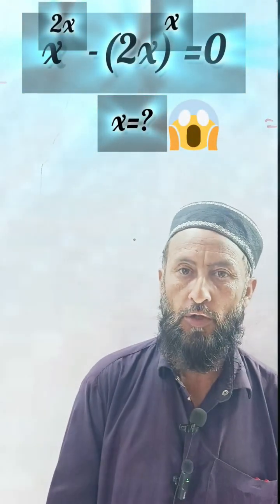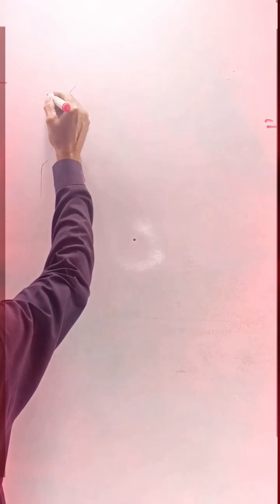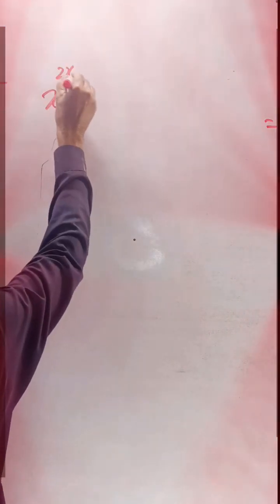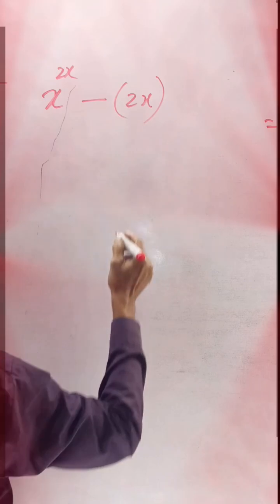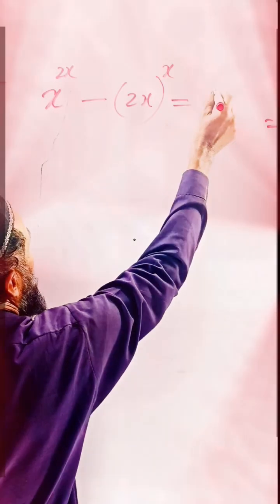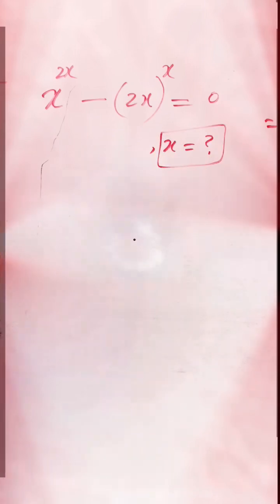Hello everybody, in my channel today we have a new exponential equation. So let's solve: 2x minus 2 to the power of x equals 0. How do we find x? Very tricky question.